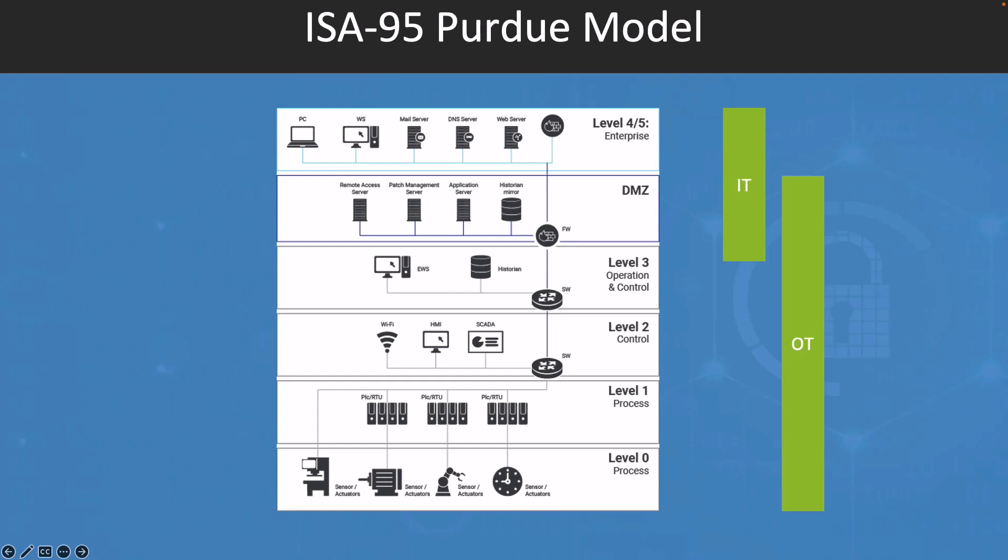Level 1, or the control level, includes the devices and systems that are used to control and monitor the physical processes at level 0. This includes PLCs and RTUs.